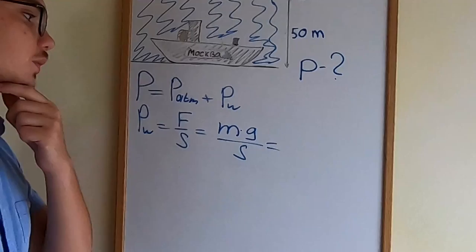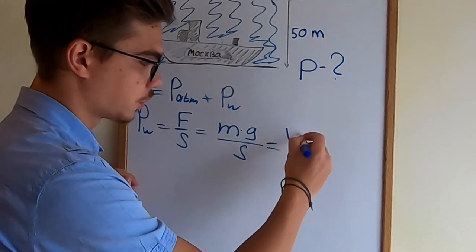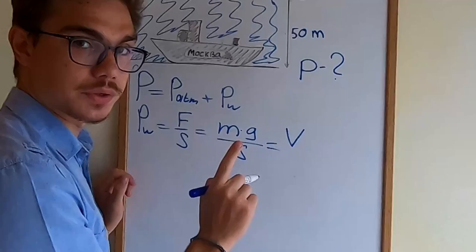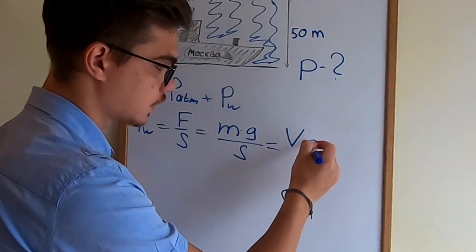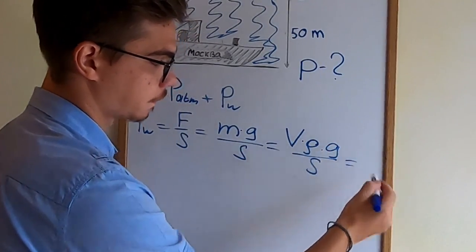But we don't know the mass. Okay, let's rewrite our mass as the volume of the water above the ship times its density and times the acceleration divided by the area.